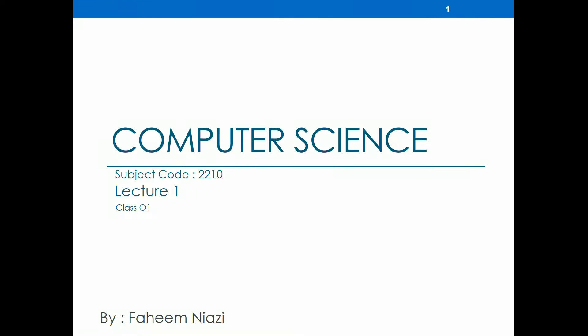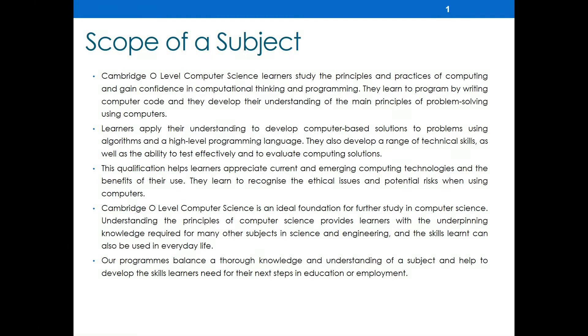Let's discuss the subject we are going to take — it's Computer Science. The subject code is 2210. At A levels, Computer Science students learn the principles and practice of computing, gaining confidence in computational thinking and programming. They learn to program by writing computer code and develop their understanding of the main principles of problem-solving. A levels Computer Science is an ideal foundation for further studies in Computer Science.